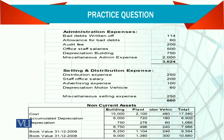Next are the administrative expenses and selling and distribution expenses schedules. Administrative expenses include: individual bad debts write-off, allowance for bad debts, audit fee, office staff salaries, depreciation on building, and miscellaneous administrative expenses. All together the total is 3,624,000.